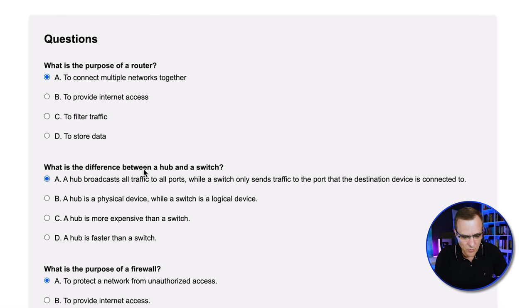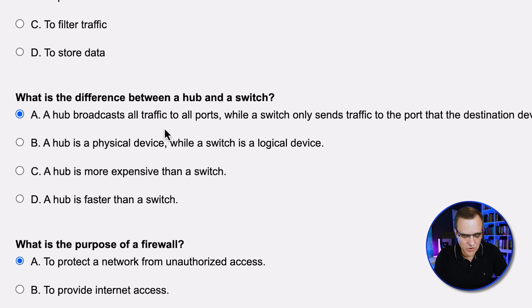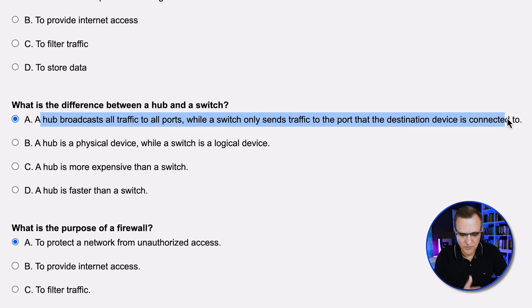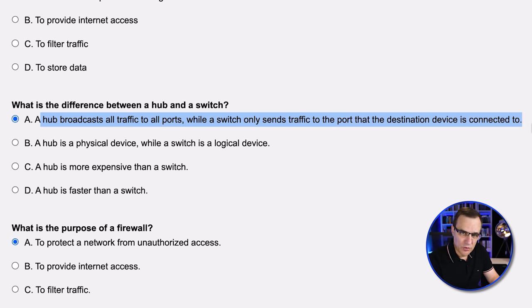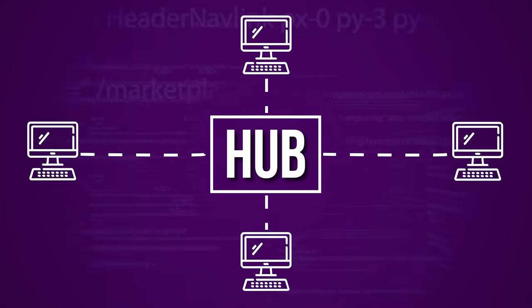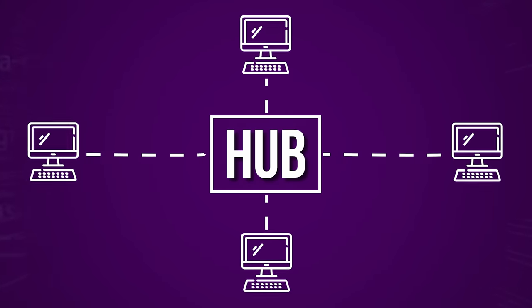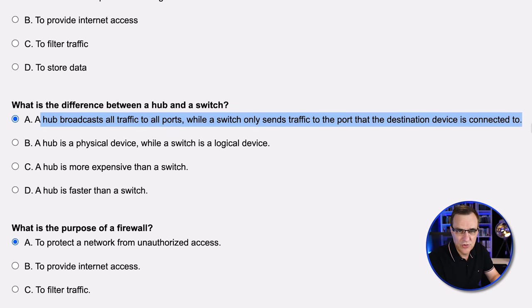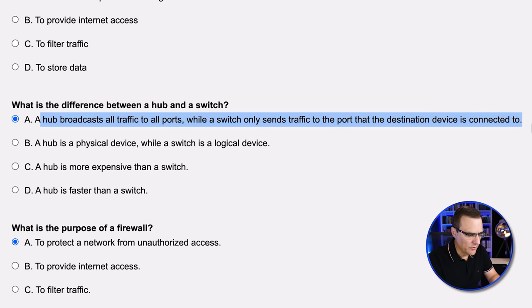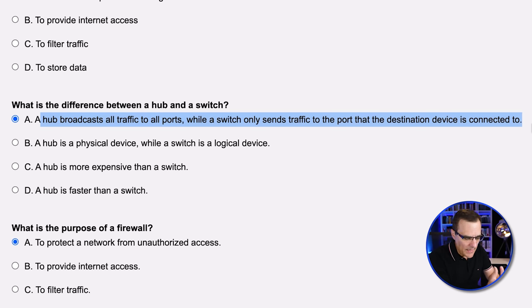Bard didn't do so well here, but let's check one of the questions. It says: what is the difference between a hub and a switch? A hub broadcasts traffic to all ports, while a switch only sends traffic to the port that the destination device is connected to. Let's be a bit pedantic — a hub doesn't broadcast traffic out of all ports, it floods traffic out of all ports. Generally, a broadcast is where traffic is sent from one device to all other devices in the network using a specific MAC address, so flooding would probably be a better term.